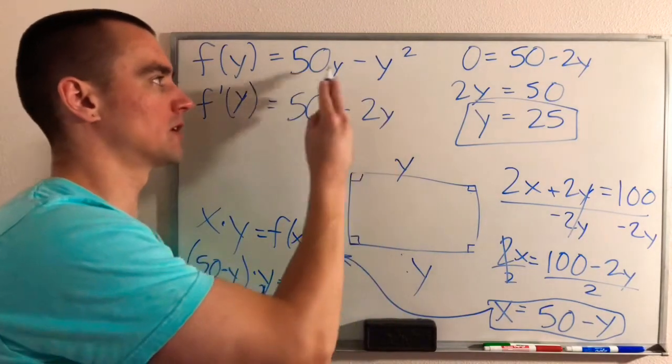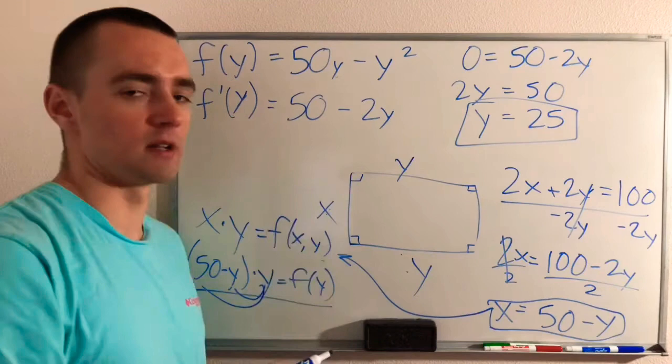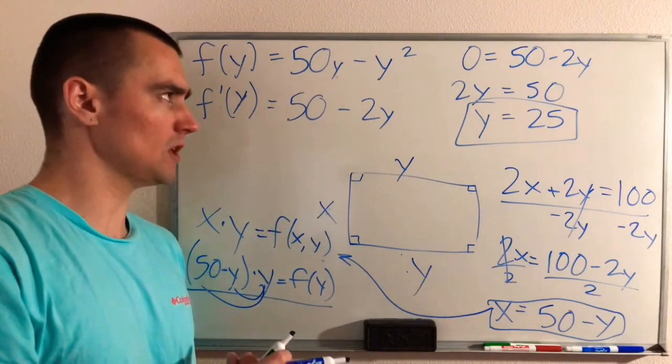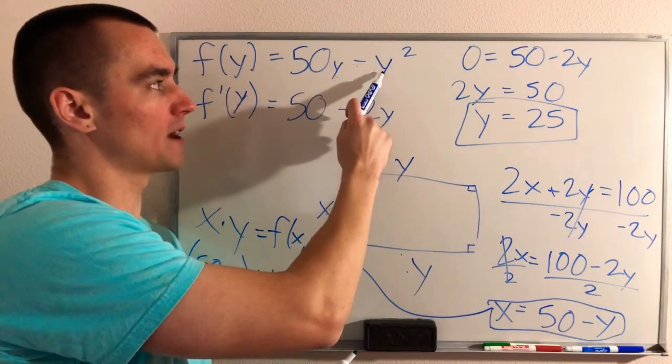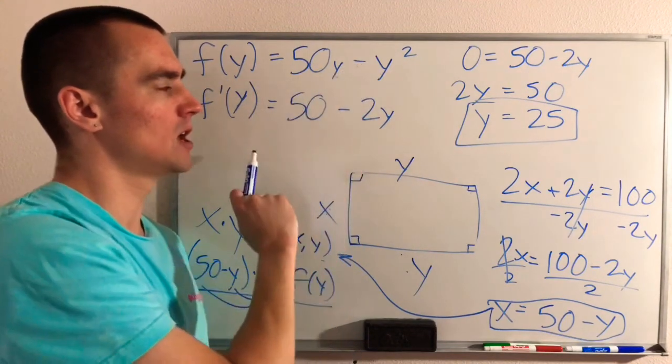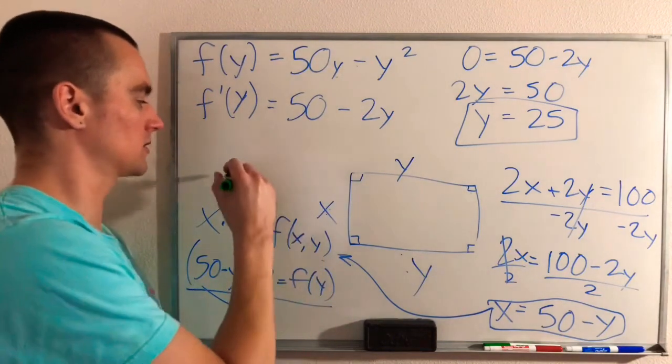So since we have just a Y squared term and a Y term, and then kind of an imaginary constant of plus 0, we know that this is going to give us a parabola. And since the coefficient of our Y squared term is negative, we know that it's going to be a downward-facing parabola. So on a graph, it might look something like this.